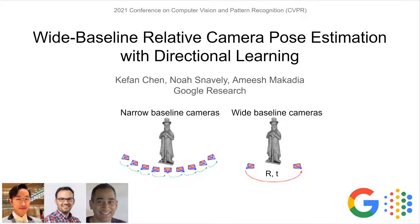Hi everyone, I'm Kofan Chen. I'm excited to present our paper, 'Wide Baseline Relative Camera Pose Estimation with Directional Learning.' This work was done while I was working as a Google AI resident in collaboration with Noah Snivy and Amish Makalia.